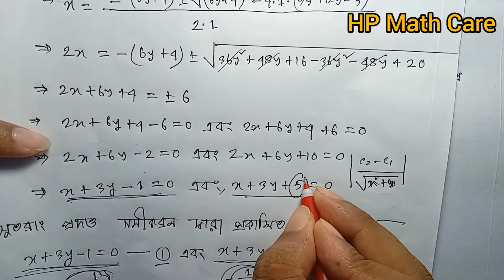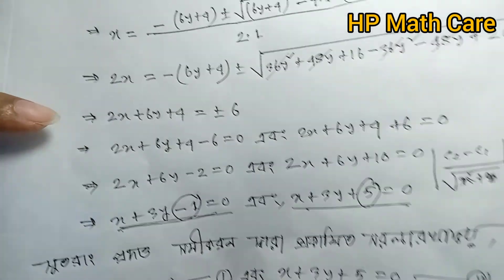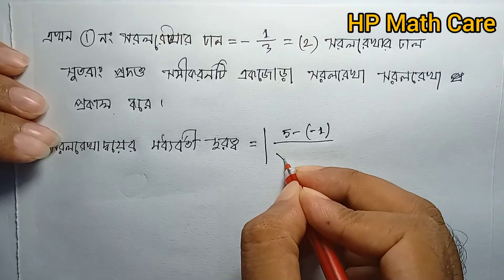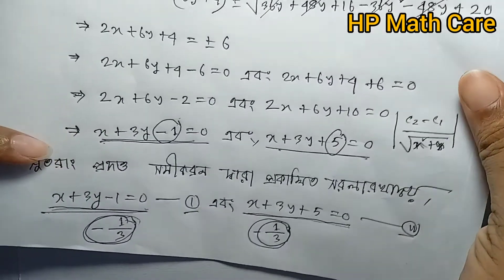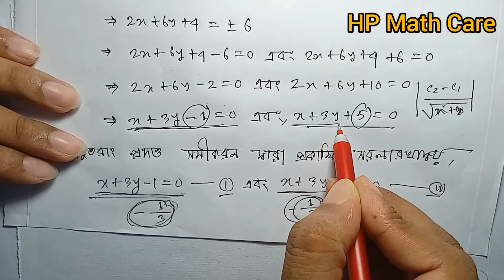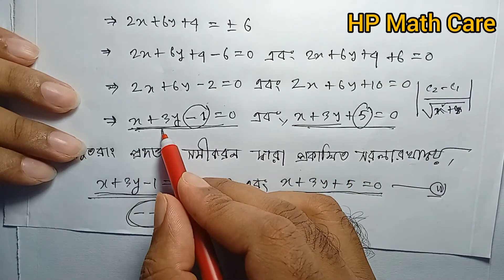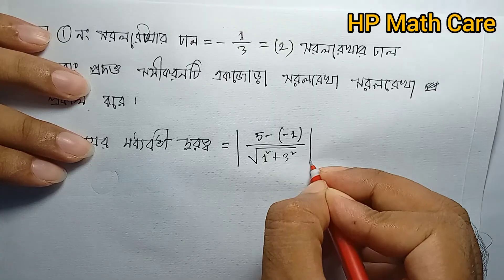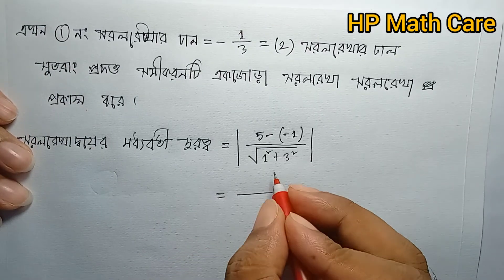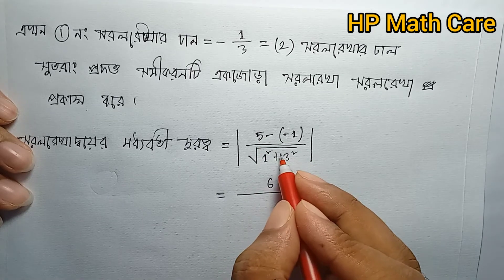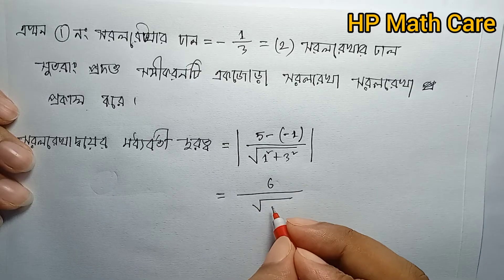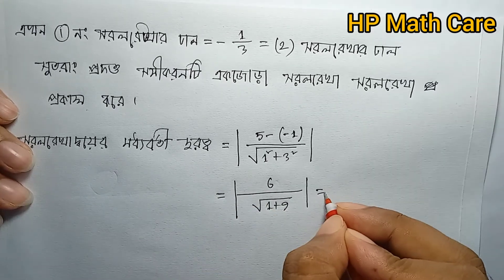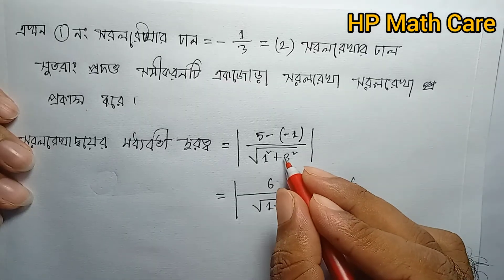So c2 is 5 and c1 is minus 1. Then c1 minus c2: we have 5 minus (minus 1) equals 6. The denominator is root of 1 squared plus 3 squared, which is root of 1 plus 9 equals root 10. So the distance is 6 divided by root 10.